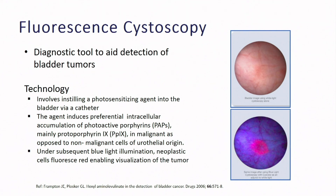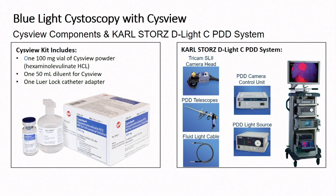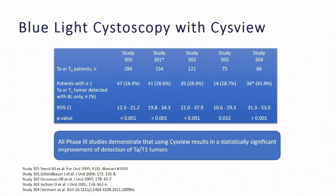Fluorescent cystoscopy is a diagnostic tool to aid in bladder cancer detection. It takes advantage of a photosensitizing agent instilled in the bladder before the procedure, which is absorbed preferentially in tumor compared to normal bladder tissue — about 10 times more. When you add blue light, it fluoresces and you can see the tumors. Unlike narrowband, which requires just equipment, this requires both equipment plus the CYSVIEW kit to instill prior to the procedure.